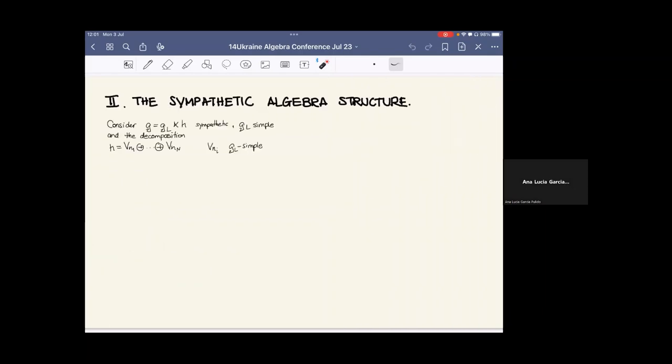Now from here onwards, this is new work joint with Gil Salgado. I'm going to start by considering this Lie algebra G and its Levi-Maltsev decomposition where H is the radical and the GL, the Levi-Maltsev factor, is simple. I'll also decompose the radical into GL simple modules that I'll call VNi. We can observe that with this choice of Levi-Maltsev factor, then the Lie algebra cannot be further decomposed into sympathetic proper sympathetic factors. It's minimal in that sense. I will describe now what the multiplicative structure that one such G must have.